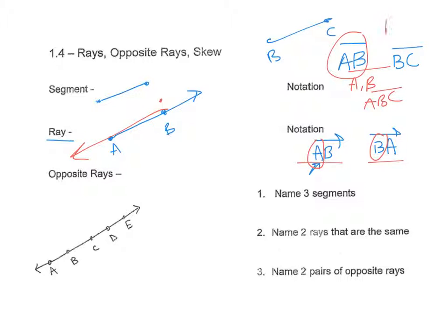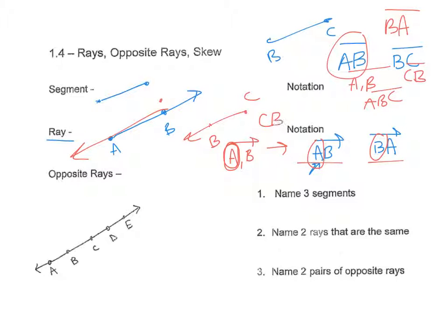That's different from a segment — segment AB is the same thing as BA, and BC is the same as CB. So you need to be careful with notation. No commas. Make sure the arrow always goes to the right and the first letter is always the starting point. Even if the ray goes the other way, your notation is still, for example, CB.